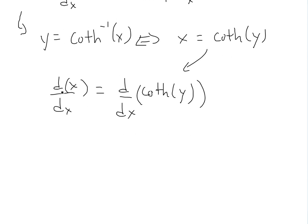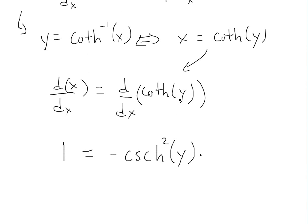The derivative of the left side is obviously 1 — the derivative of x is just 1. On the right side, as shown in an earlier video, the derivative of hyperbolic cotangent is negative hyperbolic cosecant squared of y. And since y is a function of x, we apply the chain rule and multiply by y prime.